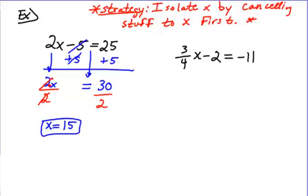Your objective is to still get what by itself? X. Let's start with what's least attached. What's least attached? Negative 2 or the minus 2? It's a plus minus 1, so we're going to do the opposite. Opposite of minus is plus.